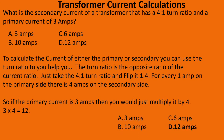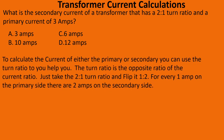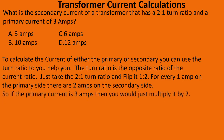In future videos I'll teach you how to double-check your work if you know the voltage. Next question: What is the secondary current of a transformer that has a two-to-one turn ratio and a primary current of three amps? The turn ratio is the opposite ratio of the current ratio — flip the two-to-one to get one-to-two. For every one amp on the primary, there are two amps on the secondary. Three times two equals six, so we select C.